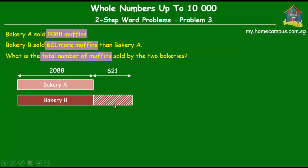So we know that Bakery B sold as many muffins as Bakery A plus another 621. So from here, can we find out the total number of muffins that Bakery B sold? Well, it's quite simple. It's just the sum of 2088 and 621. Let's do that.